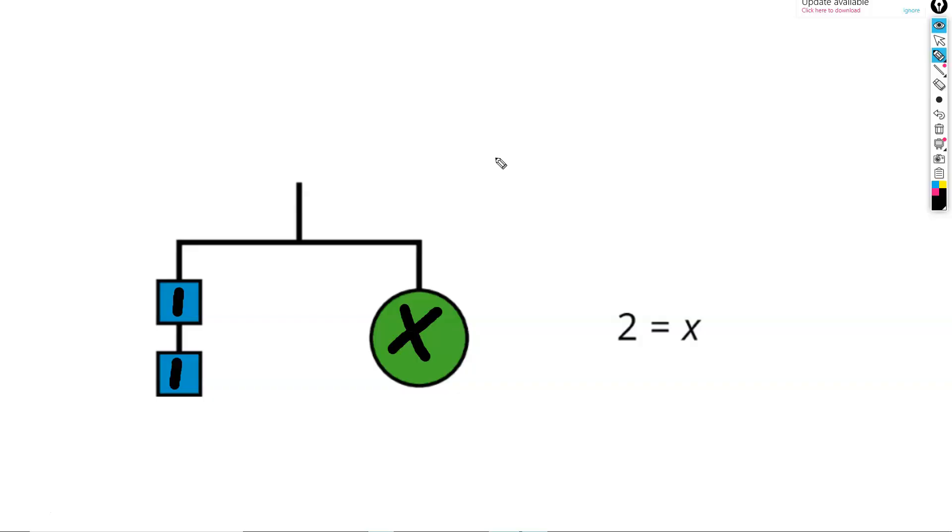This leaves us with a balanced hanger. Two ones weighing the same as 1 x and represented with the equation 2 equals x.